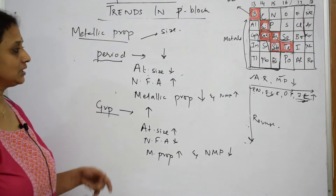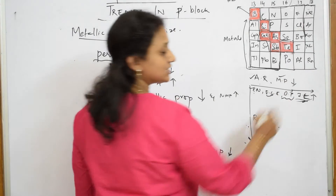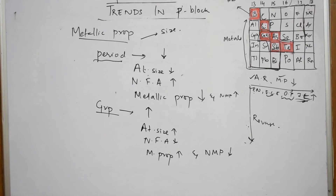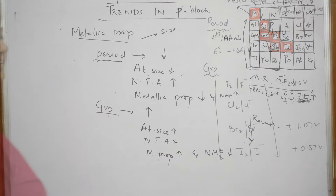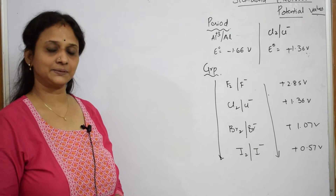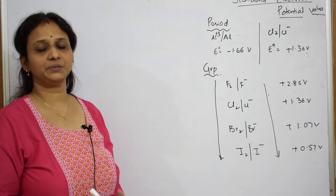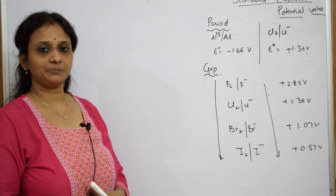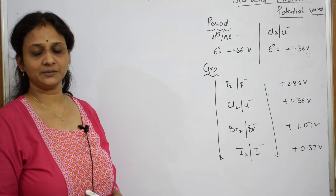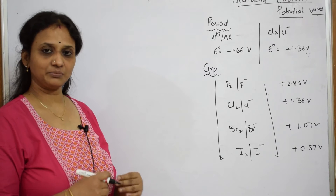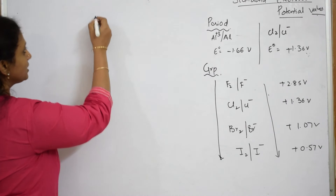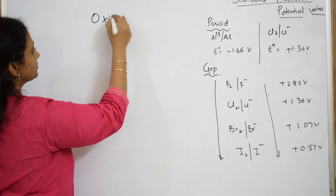Let us conclude. We have done the metallic property. I will meet you again with the oxidizing property — a very interesting topic. This is the last trend or last property of your p-block element. We have already done ionization enthalpy, electronegativity, electron gain enthalpy, atomic radii, metallic property, non-metals, and metalloids. So let us learn this last topic — oxidizing properties.